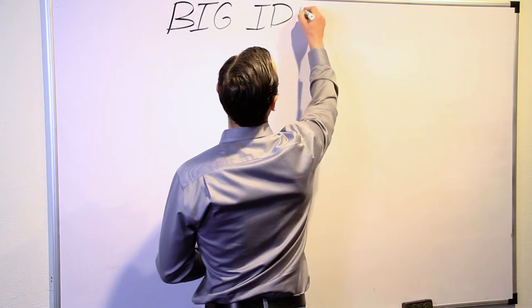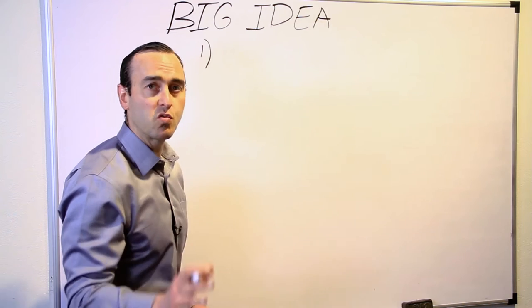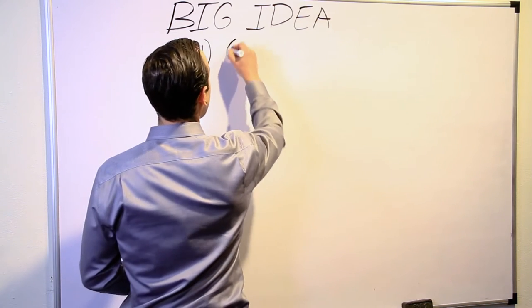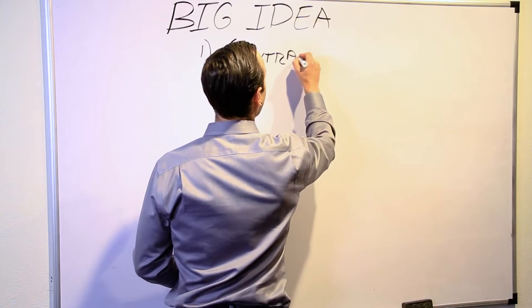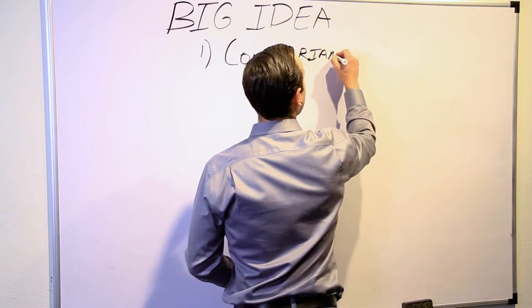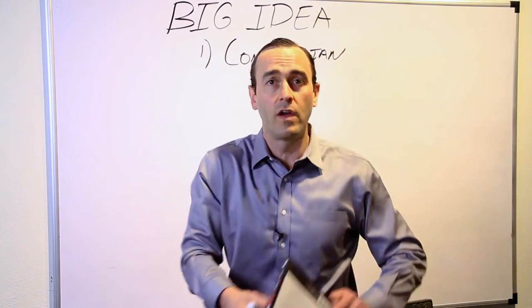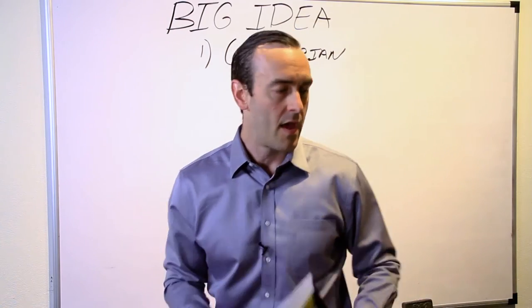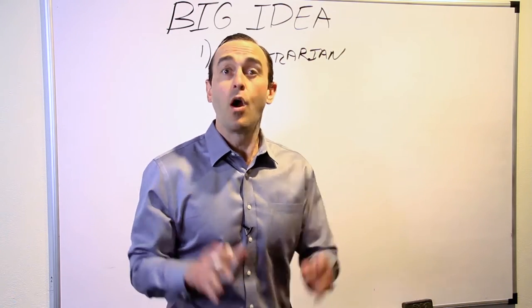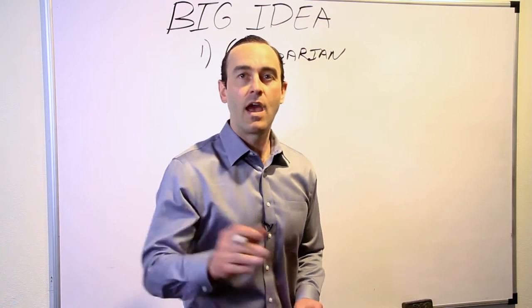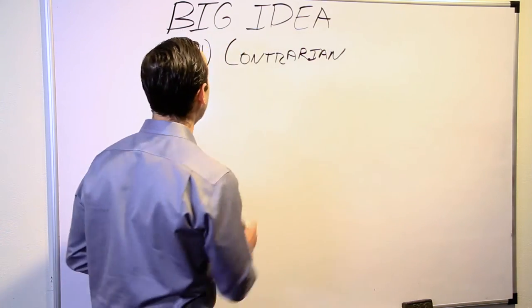Now your big idea is going to come down to four things. One, it needs to be contrarian. That means it has to go against the grain. It has to say something that most people think is true, but you're saying it's the opposite. So for example, I have a new book out called The Great Cardio Myth. Everyone thinks you have to do cardio for weight loss, and in that book, we're contrarian. We go against the grain, and we show people how to do it otherwise. So that's the big idea part there.